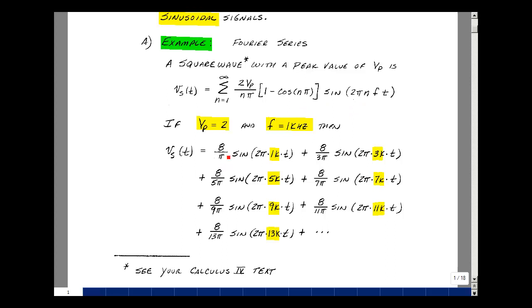Let me evaluate the equation for you. Suppose V_p is equal to 2 and f is equal to 1 kilohertz. For n equals 1, we would have 2 times 2 divided by 1π, and then the cosine of 1 times π is the cosine of 180, which is minus 1. I get a 2 from that. That gives me 8 divided by π, times the sine of 2π, 1, times 1k, times t.